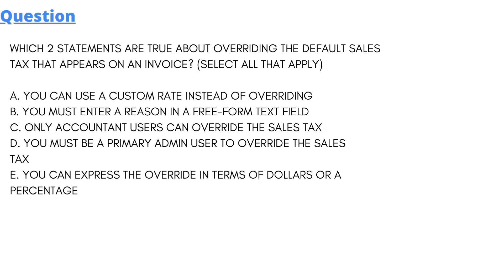We have some options here — five options. Option A: you can use a custom rate instead of overriding. Option B: you must enter a reason in a preformed text file. Option C: only an accountants user can override the sales tax. Option D: you must be a primary admin user to override the sales tax. Option E: you can express the override in terms of dollars or a percentage.